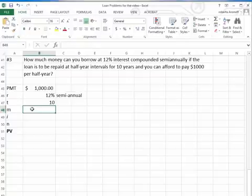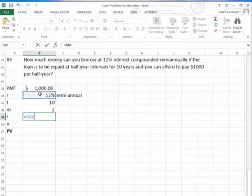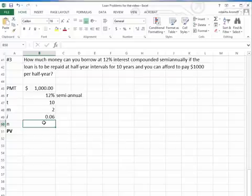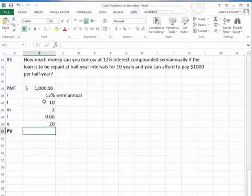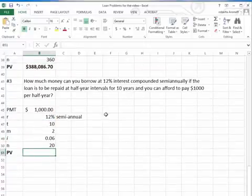So again, since it's semi-annual payments, we're making two payments per year. The interest rate is going to be the 12% divided by the two payments per year. That's the periodic interest rate. The N is going to be equal to the two times the 10, which means we're making 20 payments over the life of the loan.